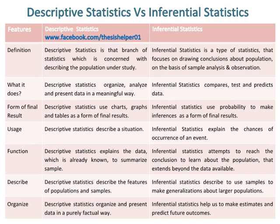Descriptive statistics describe a situation, while inferential statistics explain the chances of occurrence of an event. Descriptive statistics explain data which is already known to summarize a sample, while inferential statistics attempt to reach conclusions to learn about the population that extends beyond the data available.